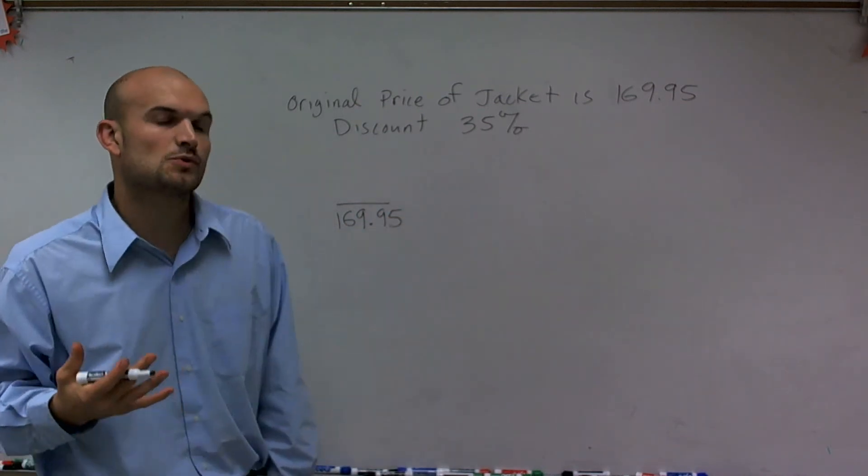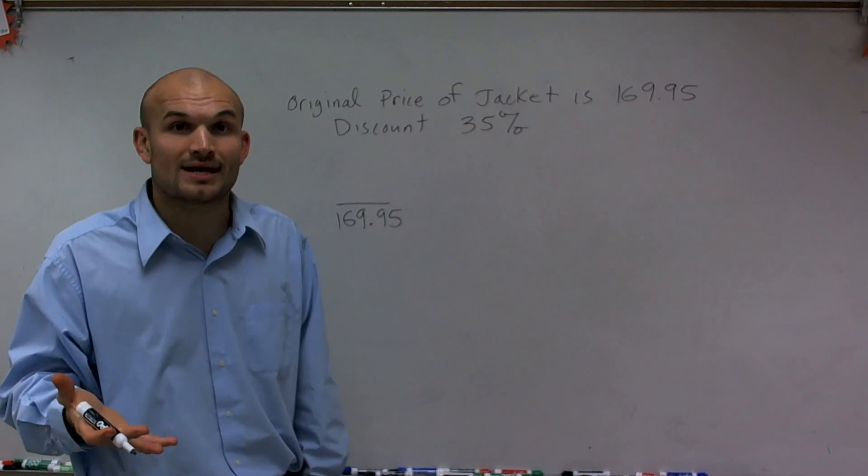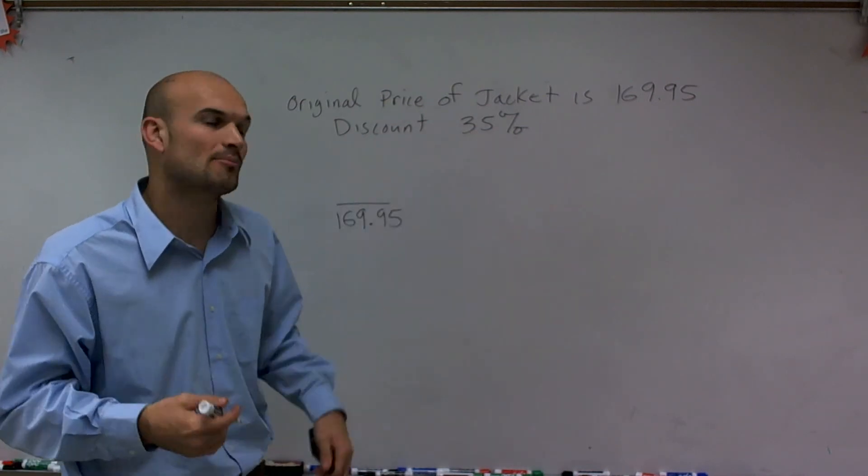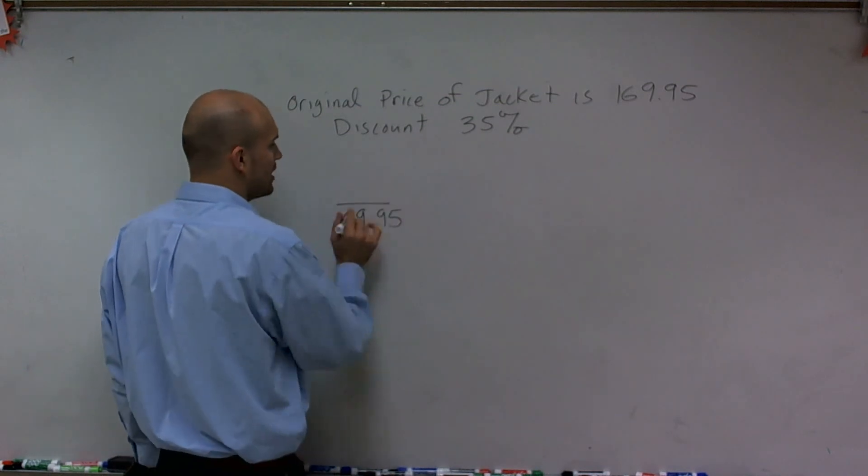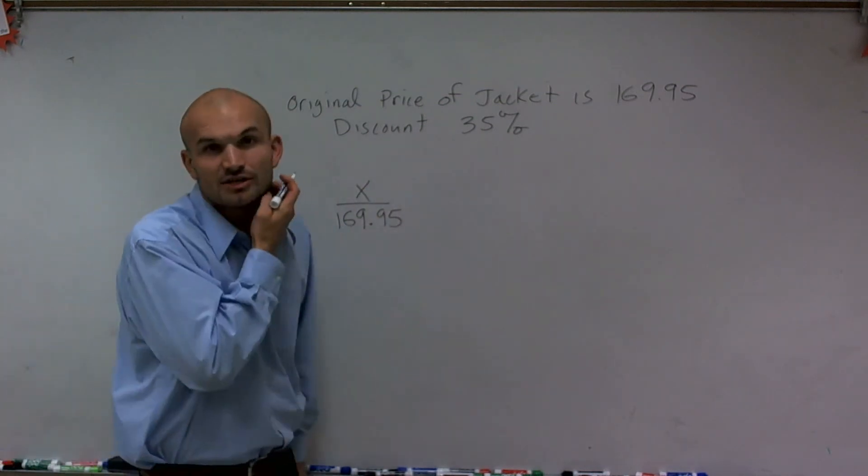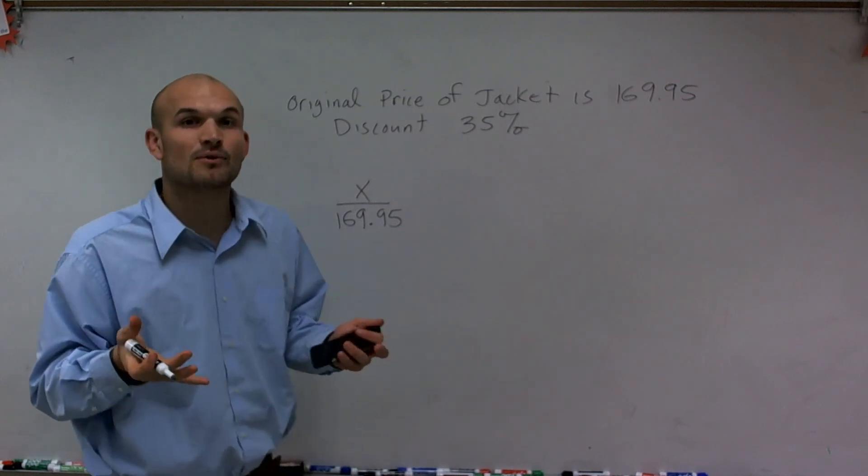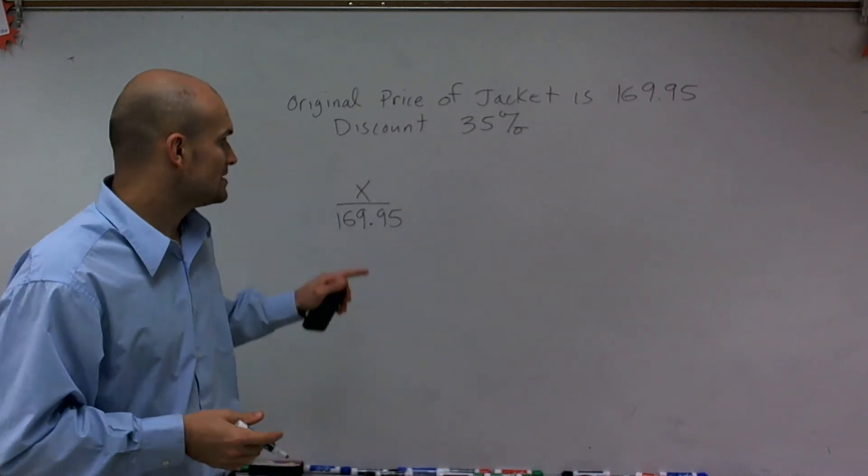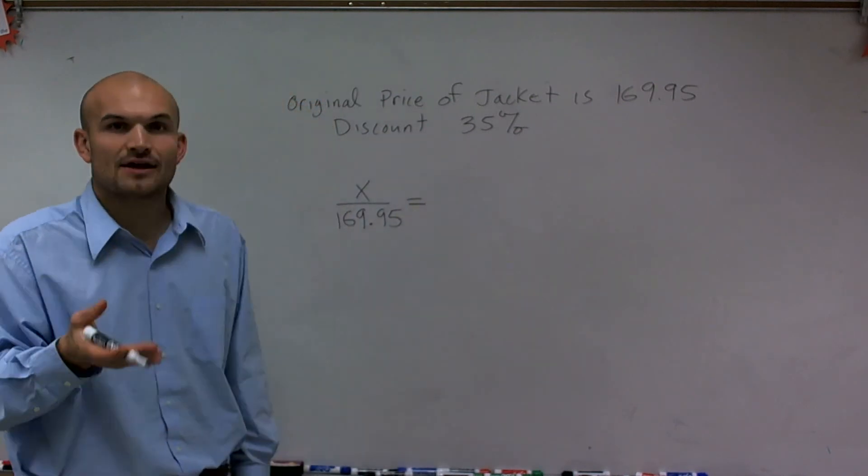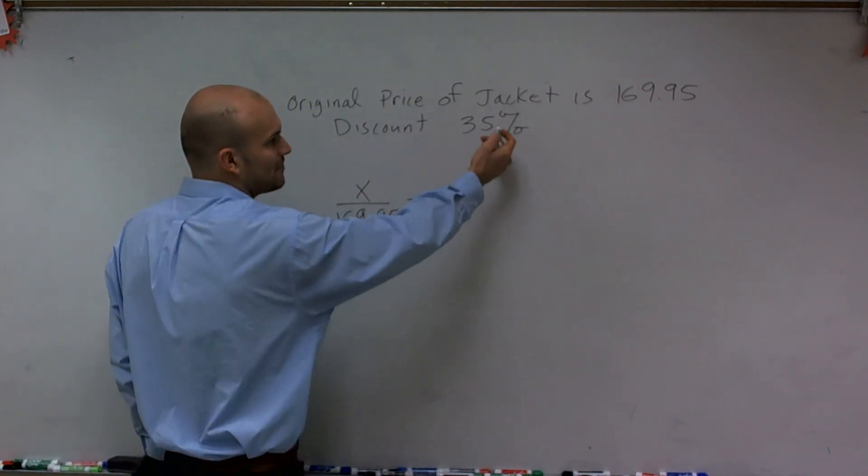Now what we want to find is the discounted price. So we know what the discount percent is, but we don't know what the discount price. So the discount price is we're going to leave as our variable, where x is going to represent the value of our discounted jacket. Now that's going to be equal to our discount that we're going to have.